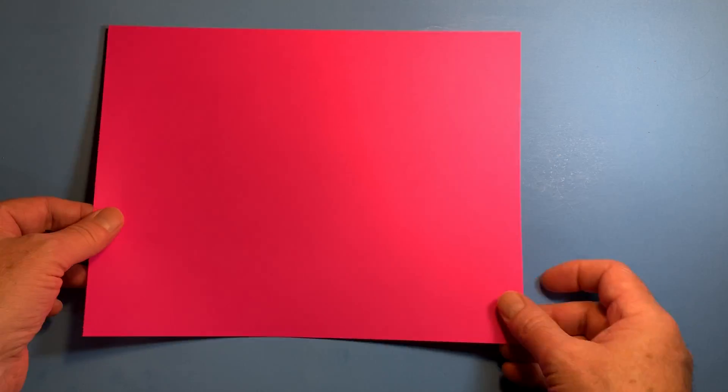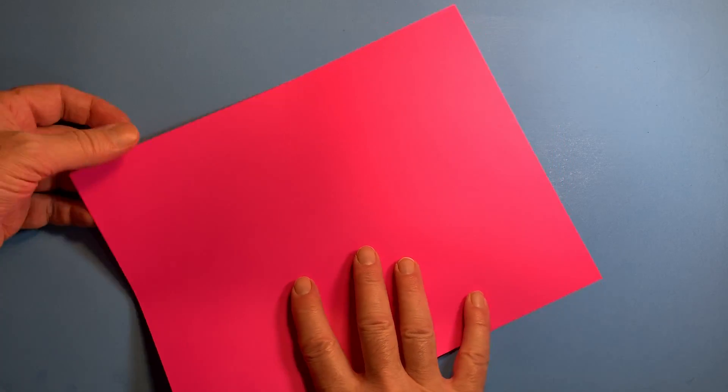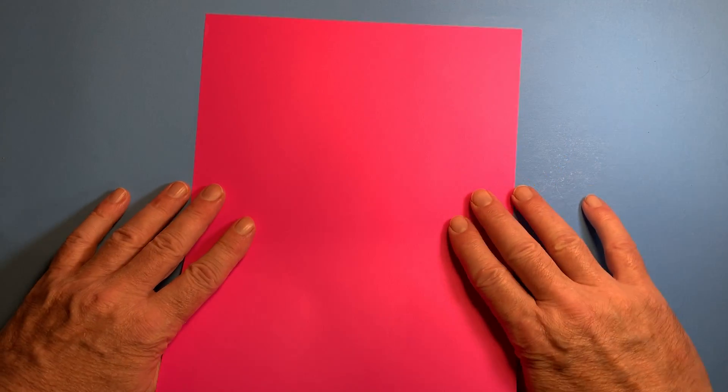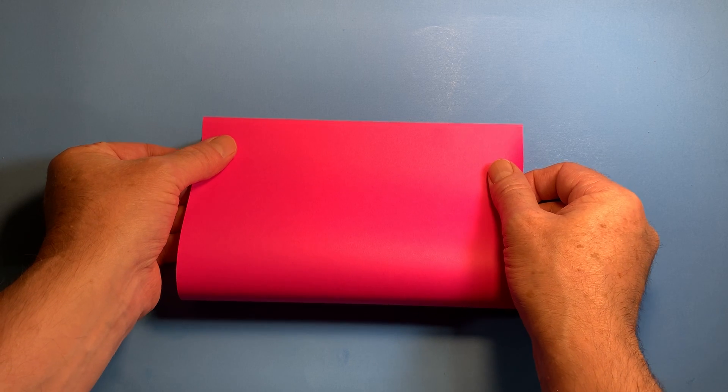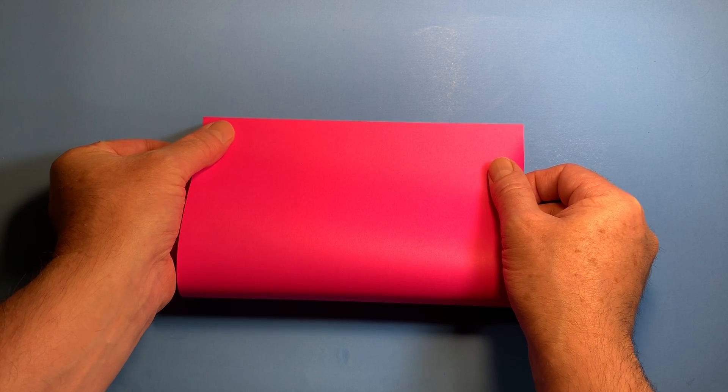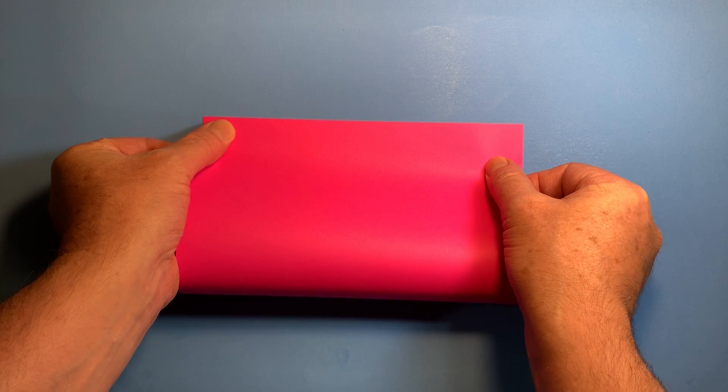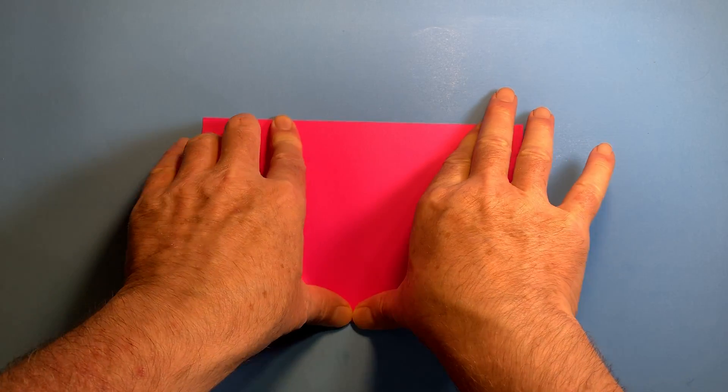We start off with a piece of paper. You can have any kind of paper you want. If it's a coated paper, plastic-coated paper, it might float longer in the water. But you don't have to put your boat in the water, but you can if you want. It will float.